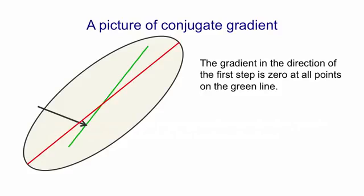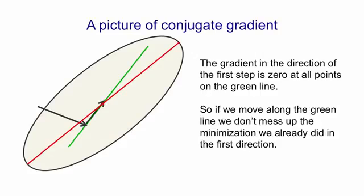So we take this first step of steepest descent. We then figure out, and I'm not going to explain how we do that, we figure out the direction of that green line. And then we do a search along the green line to find how far we should go in order to minimize the error along the green line. And we take our second step like this. And now, in this two-dimensional space, we'll be at the minimum because we're at the minimum in the direction of the first step and we're now at a minimum in the direction of the second step while still being at a minimum in the direction of the first step. And so that must be the global minimum.